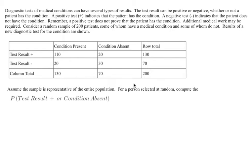So this problem is a probability problem using experimental data. We want to find out a probability, in this case the probability of a test result being positive or condition absent.